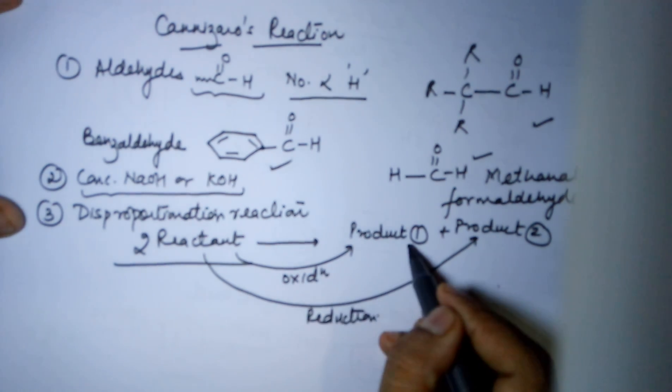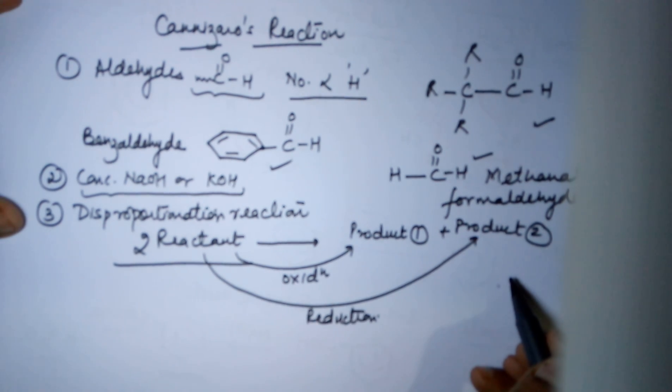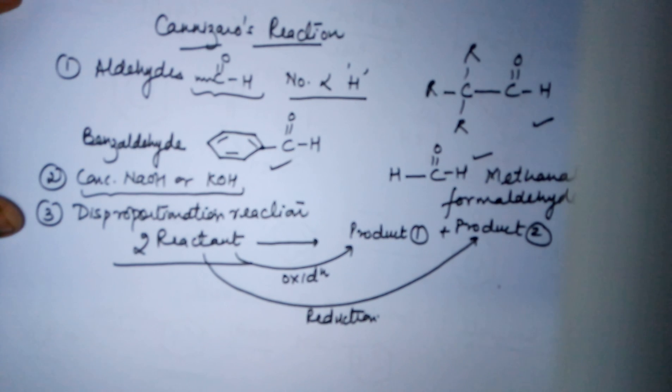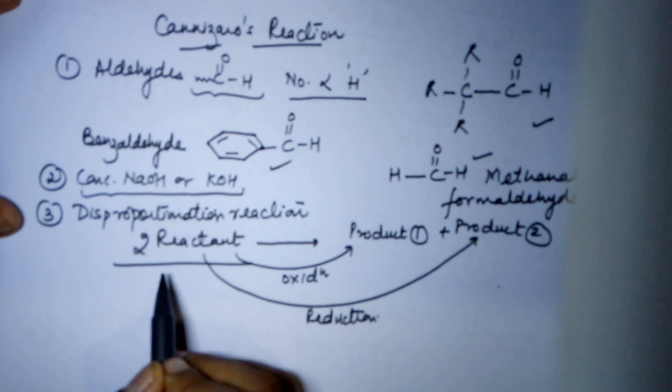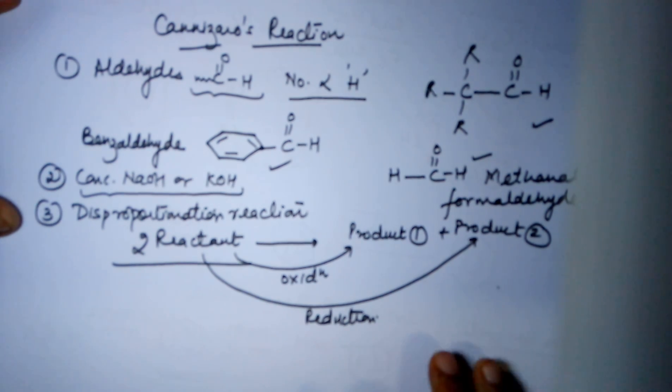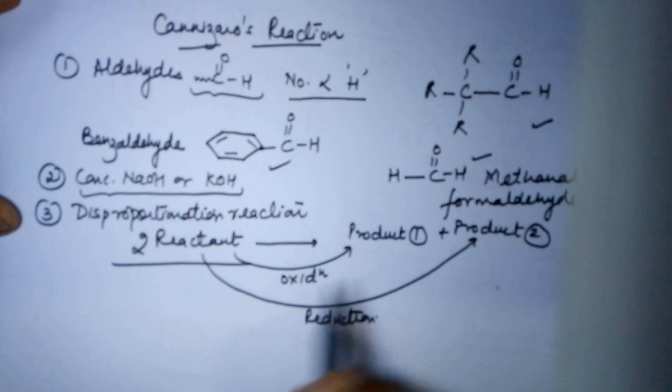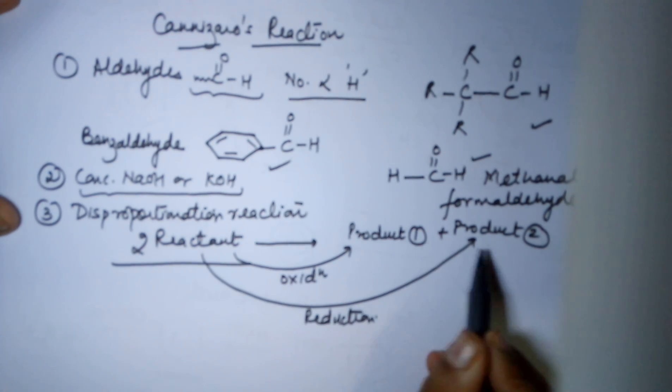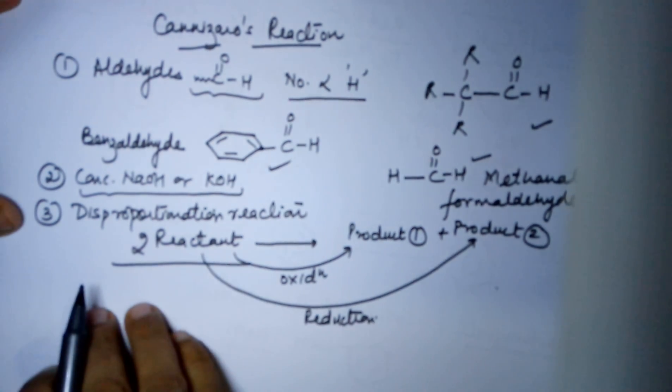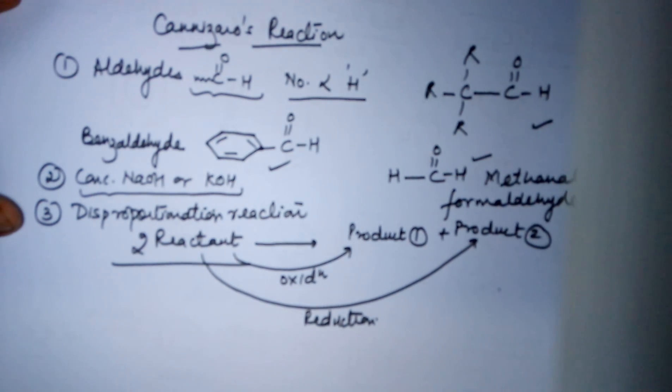Which means you require two moles of the reactant which will on oxidation give you one product, on reduction will give you the second product. Which means in your case your products would be two and reactant would be only one type. You'll be using two moles of it. Specifically such a reaction is called as a disproportionation reaction where a single identity undergoes oxidation as well as reduction to give you two products.